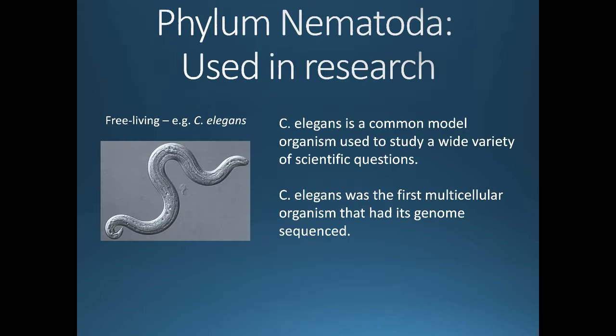C. elegans is very commonly used in research — we have scientists in our own department who study it. It's used for a wide variety of research questions. An interesting fact is that in the late 1990s and early 2000s, C. elegans was the first multicellular organism to have its genome sequenced. This was a huge breakthrough, allowing scientists to look at specific genes and see what happens when a gene is removed or overexpressed. Today many organisms have their genome sequenced, including humans, but at the time this was extraordinary.